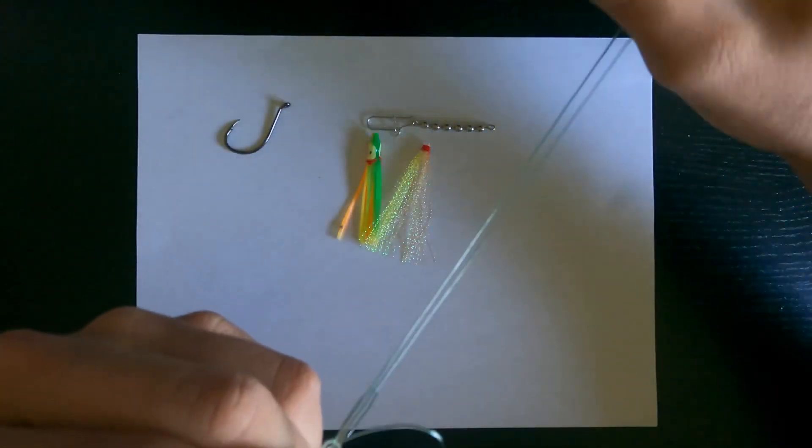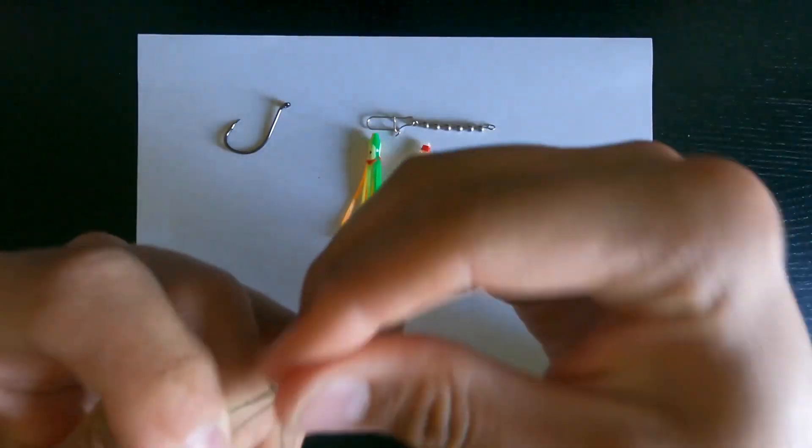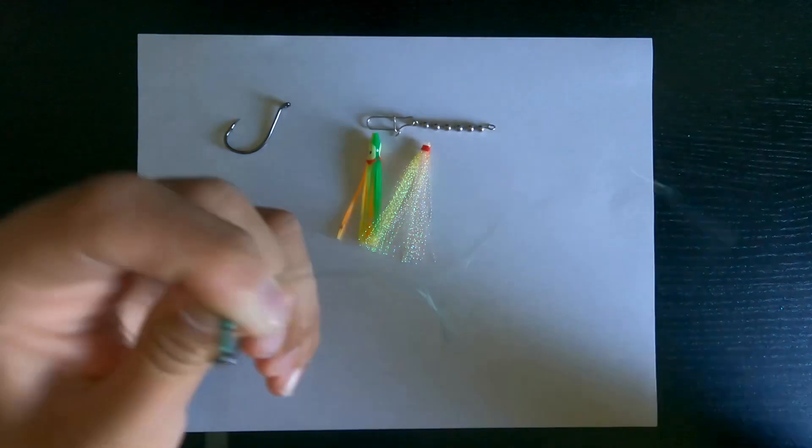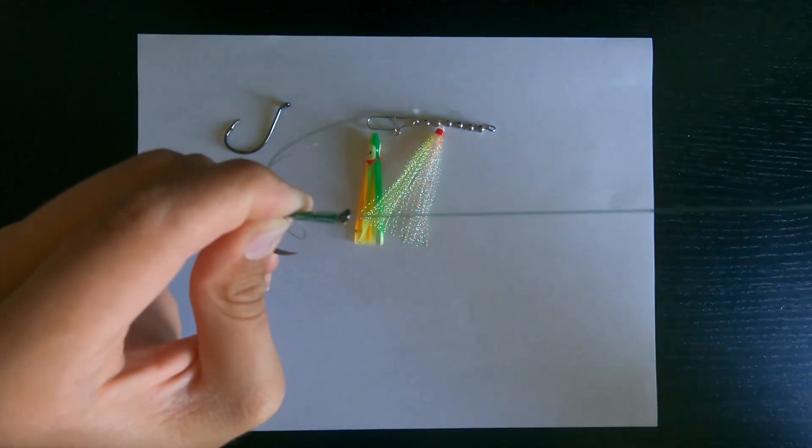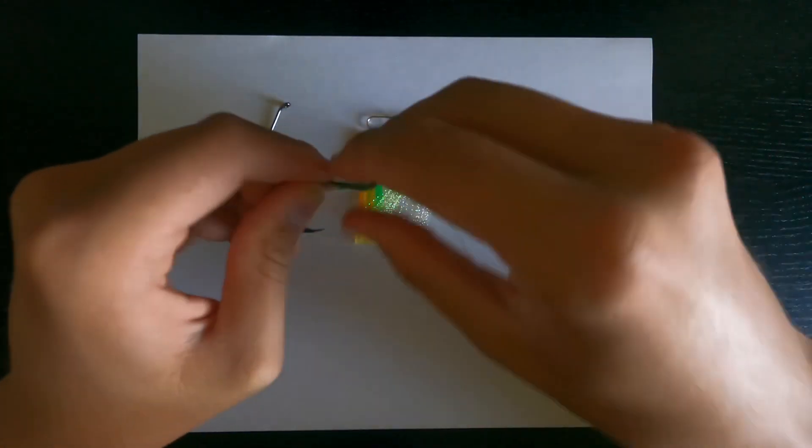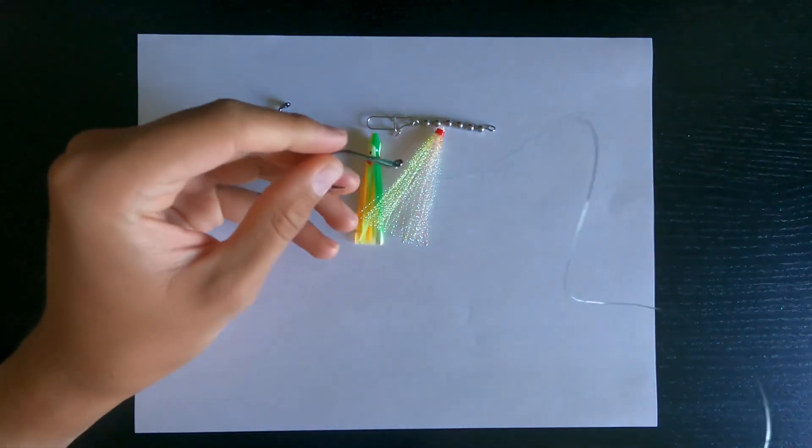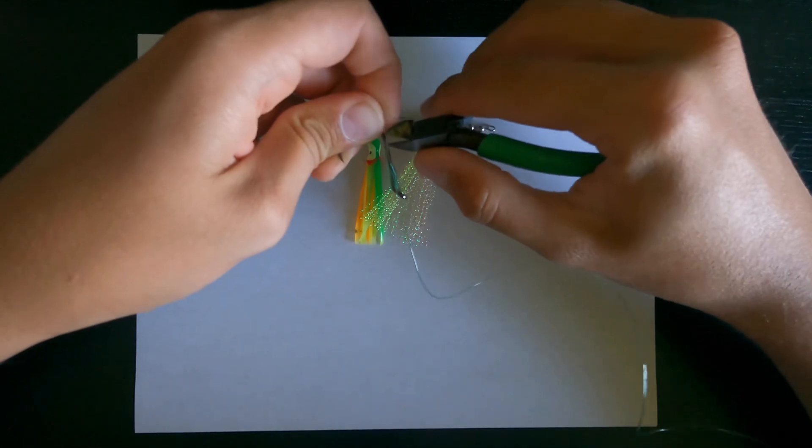Just keep pulling, make sure it doesn't get tangled up. As you guys can see it kind of did there. There we go, okay. Just like that, make sure you tighten it up, then I clip my tag end.